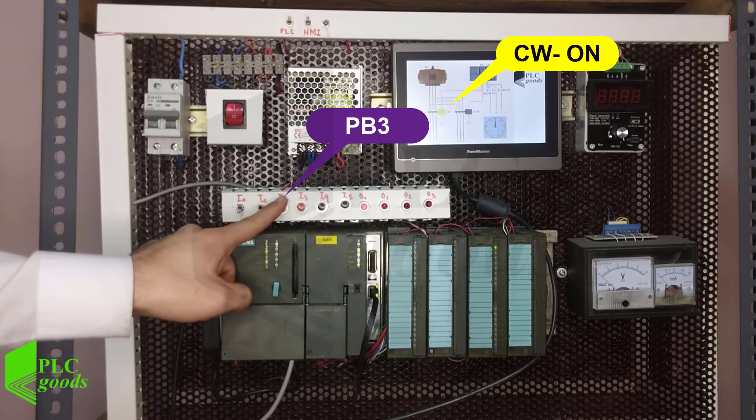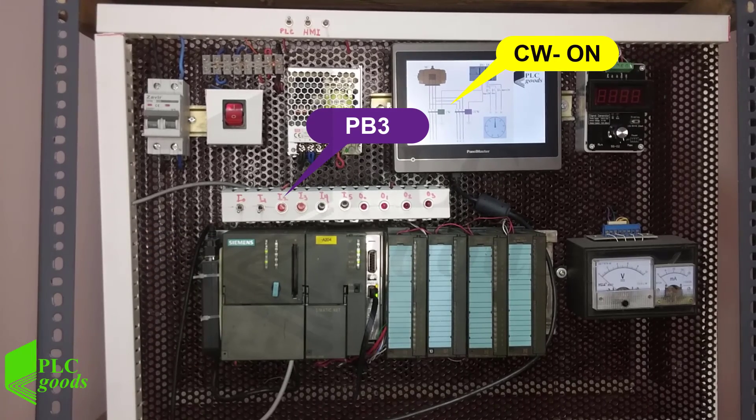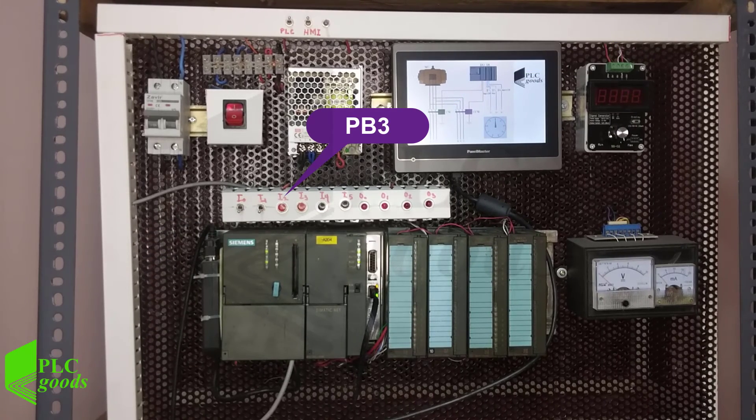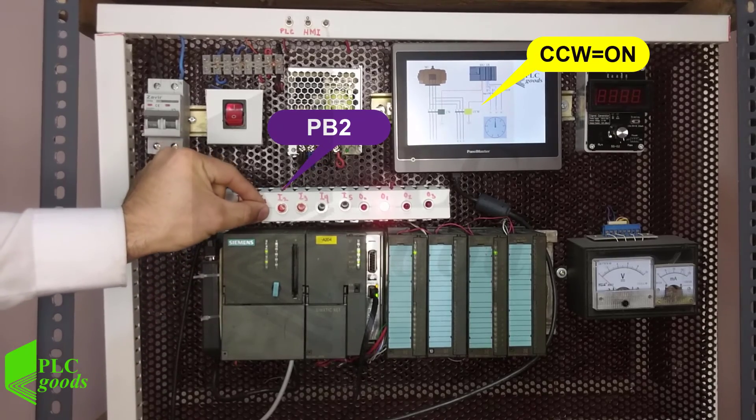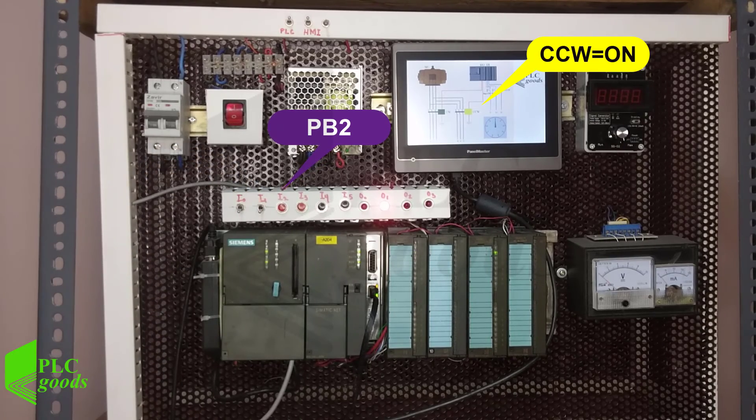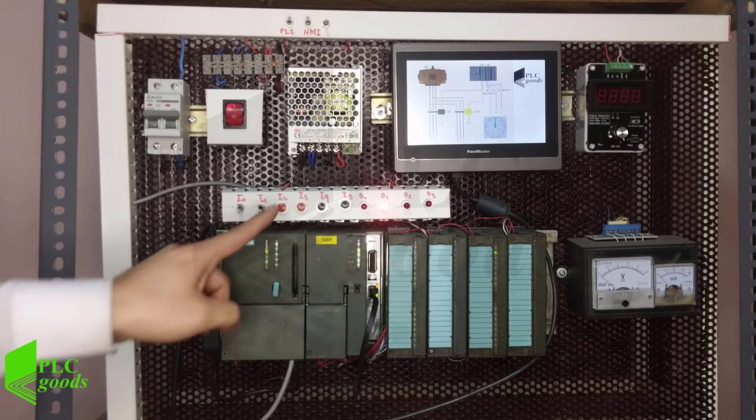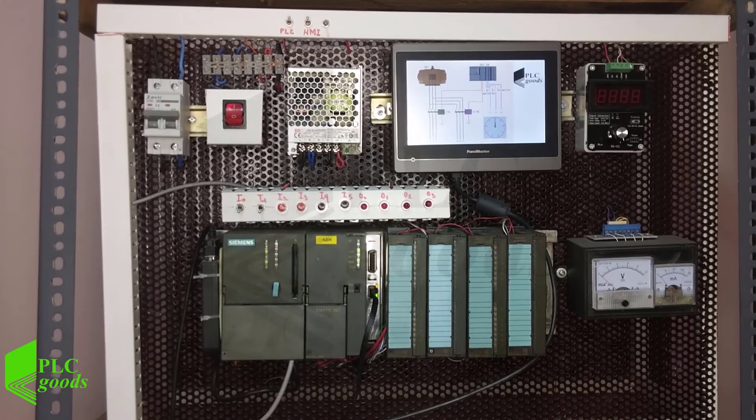I depress PB3 to stop the motor. I press PB2 to turn on the counterclockwise contactor. I press PB3 to turn it off.